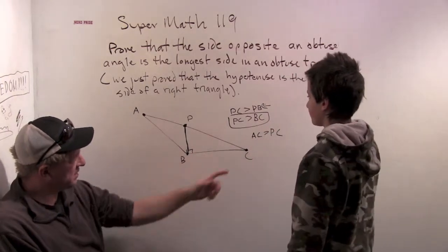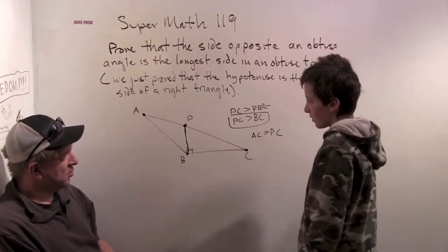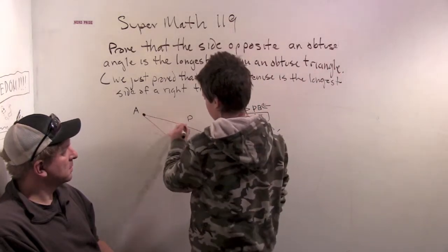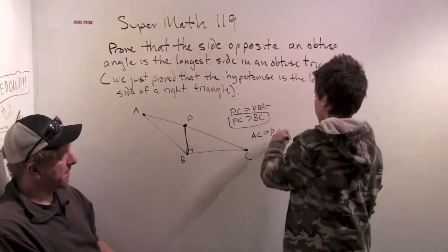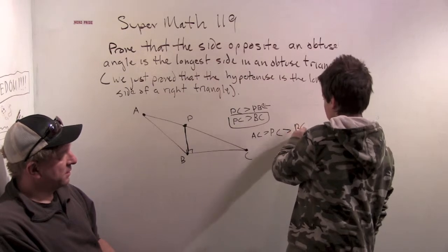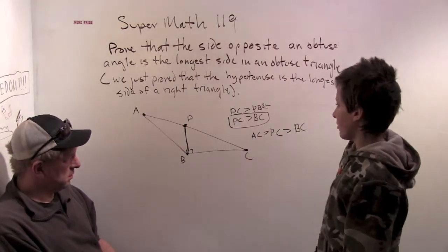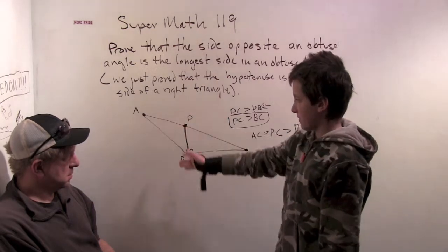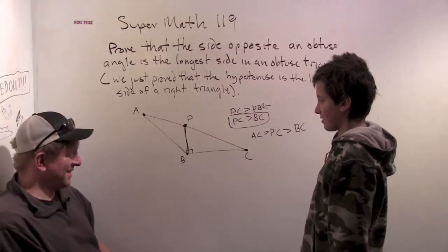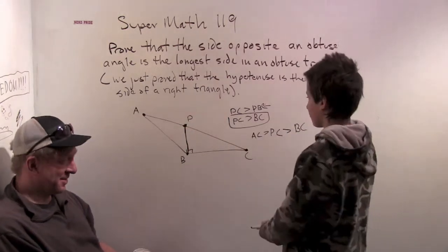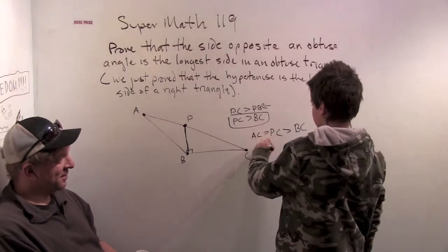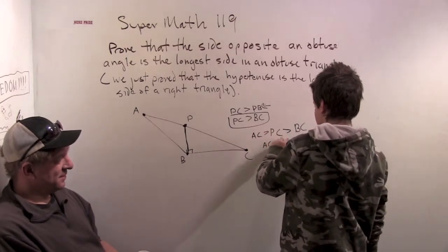AC is greater than PC. Okay, why is that? Well, because you've got this little bit here. Alright, great. So, and PC is greater than BC. So because of this, and because we're assuming that all the distances are positive distances. Okay, yeah. Distances are positive. That's an okay assumption. AC is greater than BC.